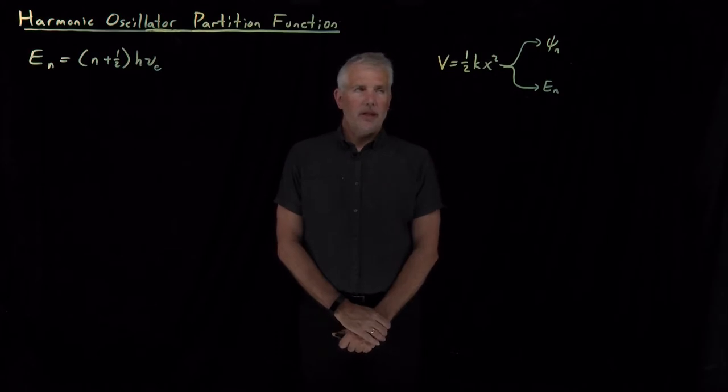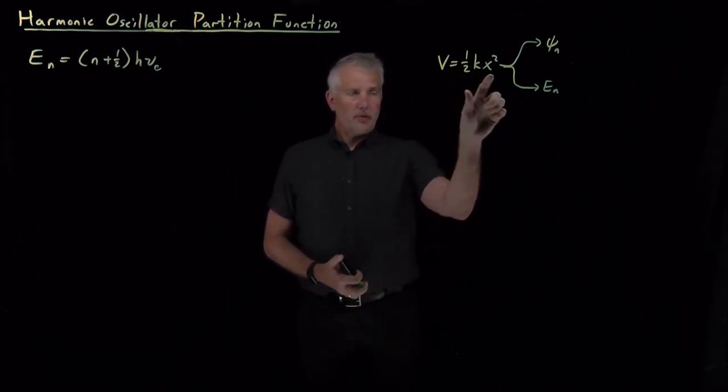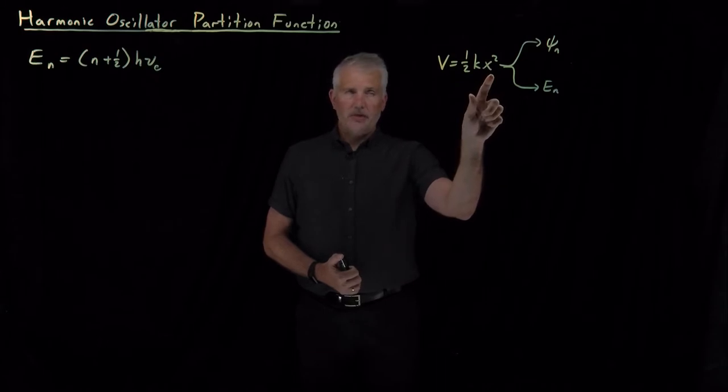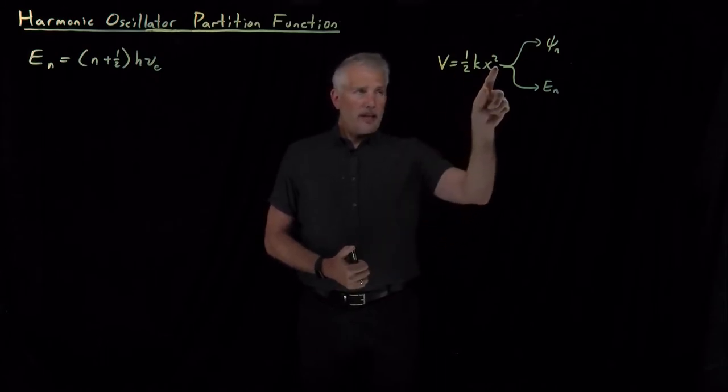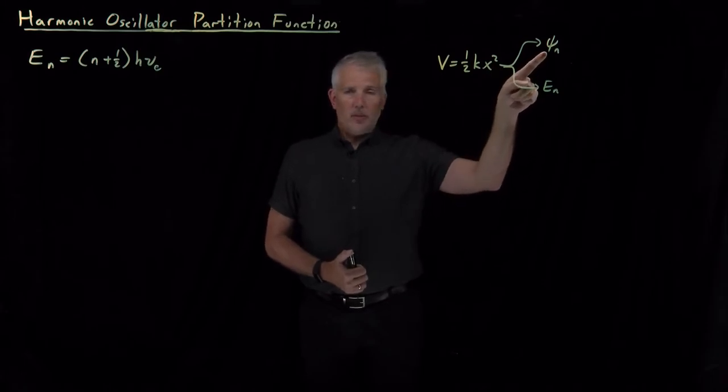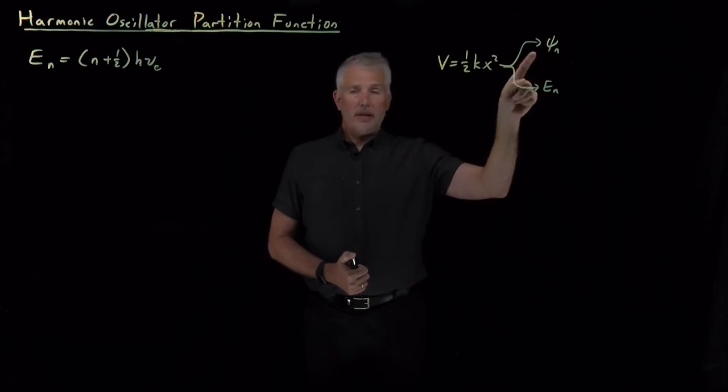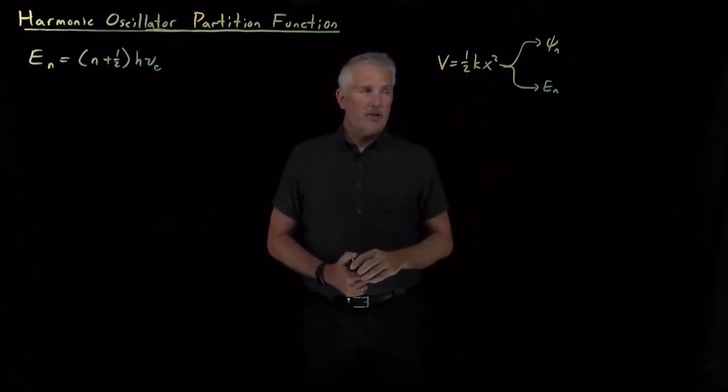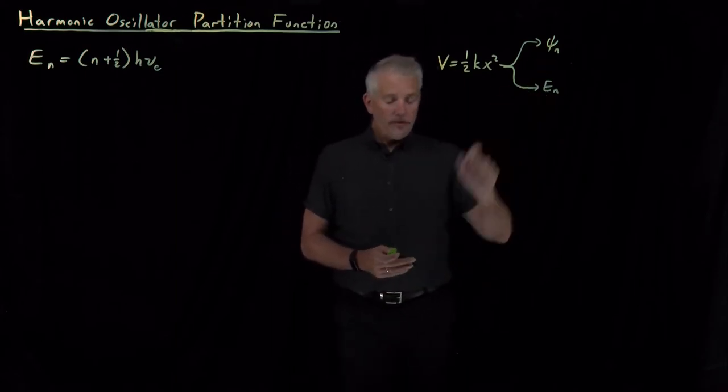So far for the harmonic oscillator, here's what we've managed to do. We started with our assumption for what the potential energy is for our harmonic oscillator, quadratic function, one-half kx squared. Quantum mechanics allowed us to solve for the wave functions of particles that obey the Schrodinger equation with that potential energy, and also the energies of the functions that have those wave functions.